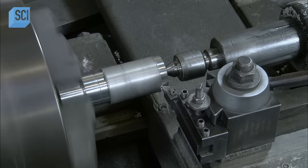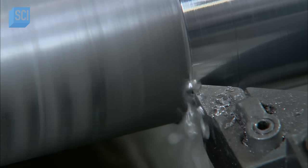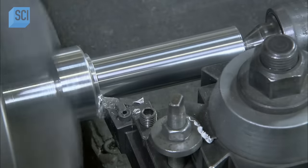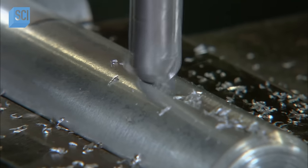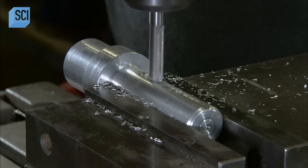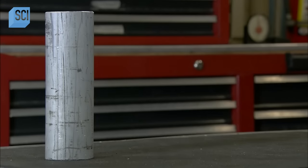Next, an aluminum cylinder spins in a lathe as cutting tools transform it into a mount for a film camera. They also machine a bracket for a communications antenna. It's quite a transformation.